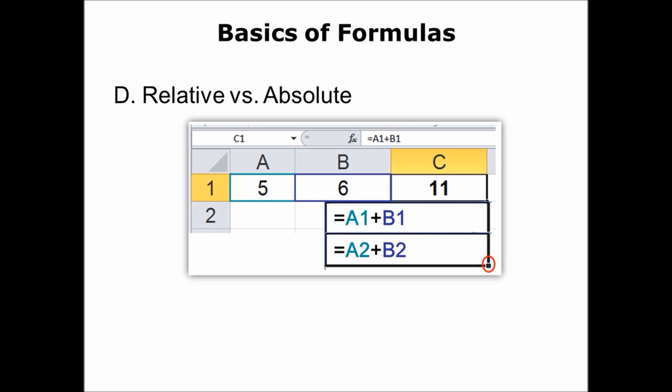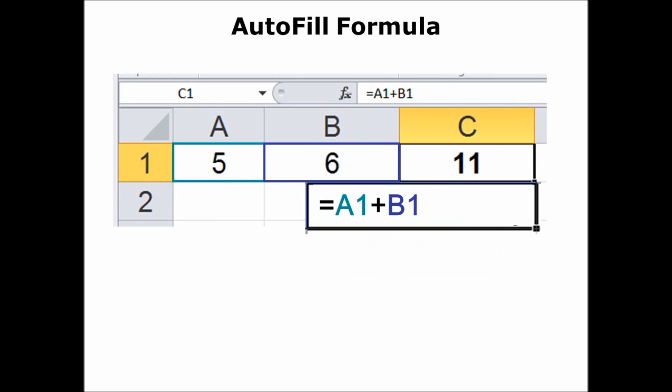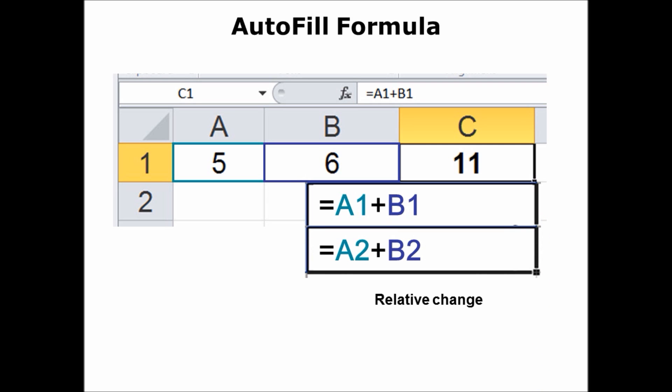Now let's look at the difference between relative versus absolute — this is a little more complex concept. Let's say my formula is A1 plus B1 and I want to use Autofill to drag it all the way down. That will give us a relative change. That means for whatever I put in A2 and B2, the formula will become A2 plus B2, and it will be correct. As I bring my formula down, it changes based on what row it happens to be in. That's called a relative change, and that is exactly what we want in this situation.